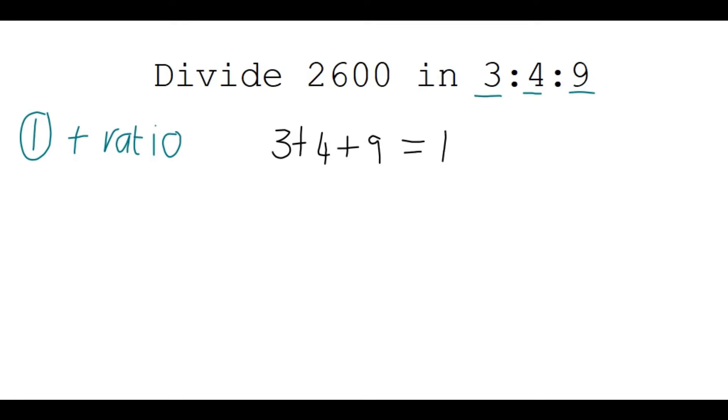Then now something else that they can ask, another type of question. They can say, divide something. Let's choose a number. Let's say we divide 2600 in the ratio 3 to 4 to 9. When they ask you something like this, there are steps that you can follow. The first step is you will add all the numbers involved in the ratio. So I'm going to say 3 plus 4 plus 9 to get the total. And that is 16.